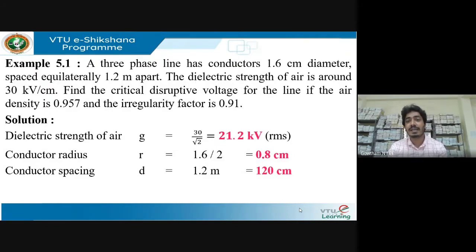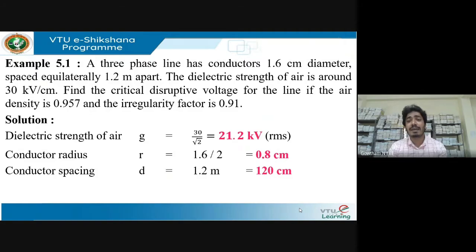A three-phase line has conductors 1.6 centimeters in diameter. These conductors are placed equilaterally with 1.2 meters apart, and the dielectric strength of air is around 30 kV per centimeter. You are supposed to find out the critical disruptive voltage for the line if it has an air density of 0.957 and an irregularity factor of 0.91.